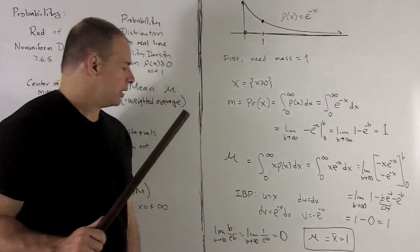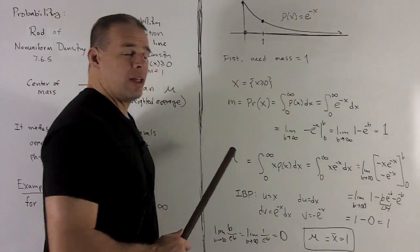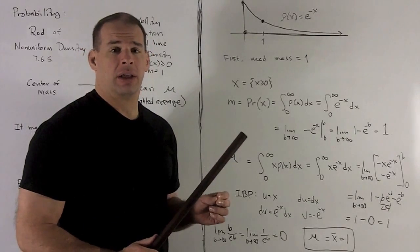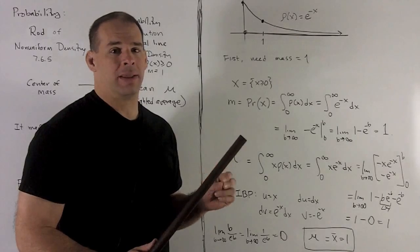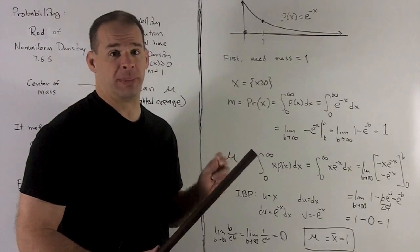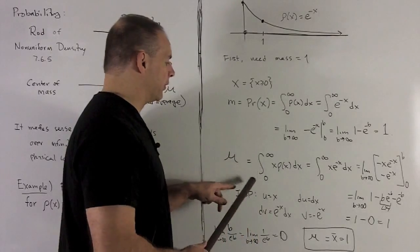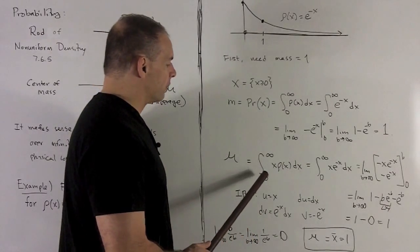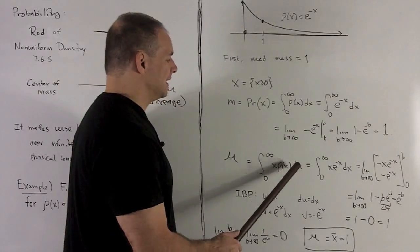Now let's calculate the mean. So first, I'm going to calculate the moment at the origin and then divide by the mass. But if we notice, since the mass is equal to one, the mean and the moment about the origin are going to be the same. So all I have to do is write out the formula for the moment about the origin. So we have definite integral from zero to infinity of x times the density function dx.